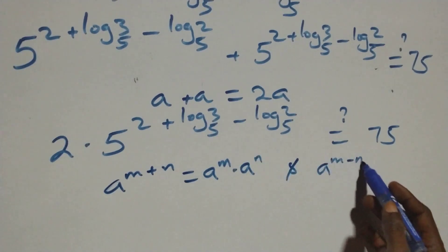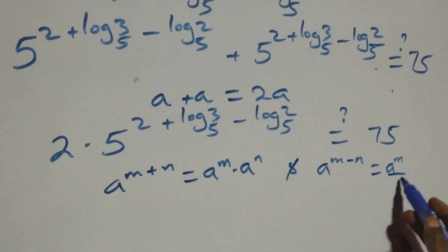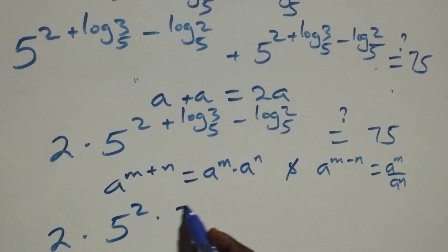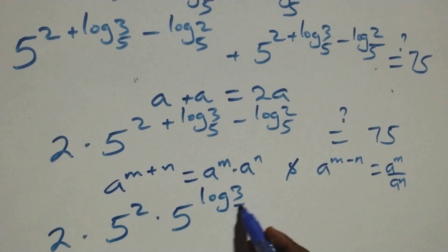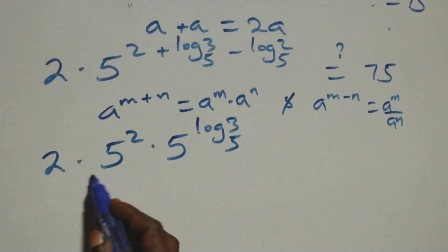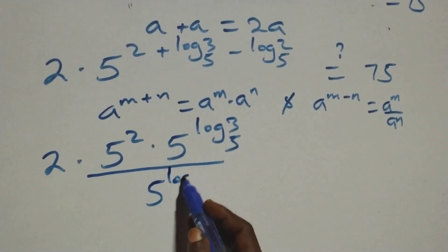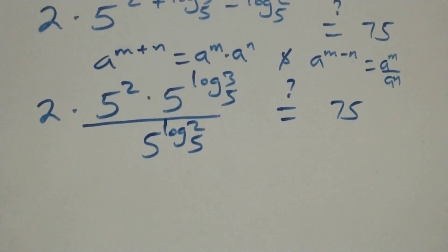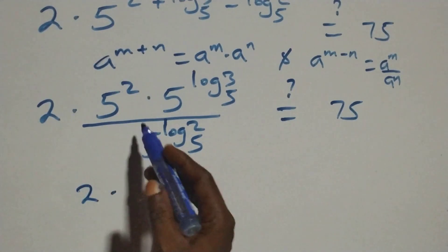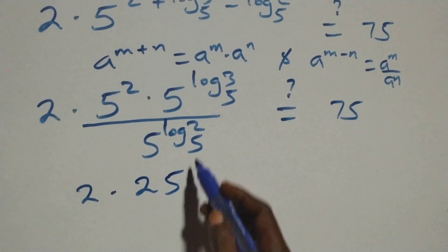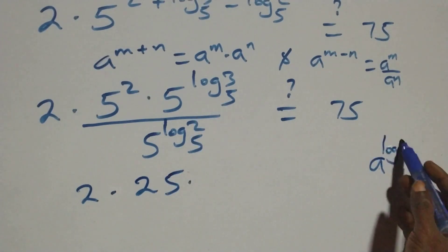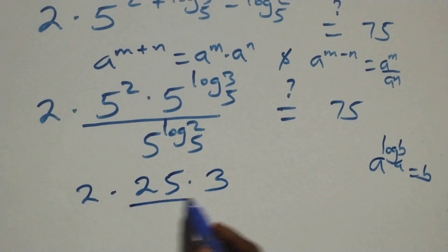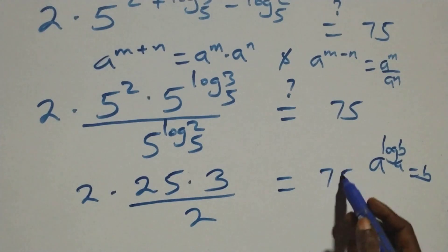Applying the law of indices, this becomes 2 times 5² times 5^(log₅3) divided by 5^(log₅2) equals 75. We then apply the identity a^(log_a b) equals b, giving us 2 times 25 times (3 over 2) equals 75.